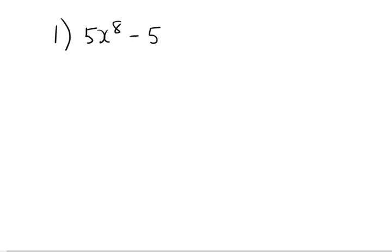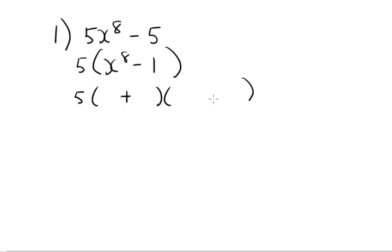Let's have a look at number 1. Number 1 was 5x to the power of 8 minus 5. In this case we can see that my highest common factor is 5 and I'm left with x to the power of 8 minus 1. If I have a look at x to the power of 8 minus 1, that's going to be difference of two squares because I've got two terms with a negative in the middle. The square root of x to the power of 8 is x to the power of 4, because x⁴ multiplied by x⁴ gives back x⁸. Square root of 1 is 1.